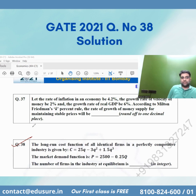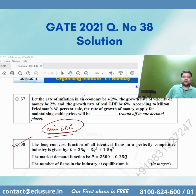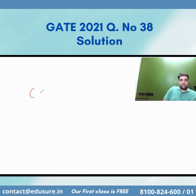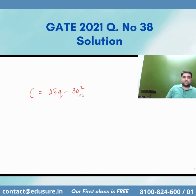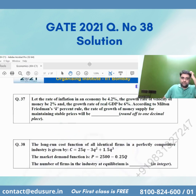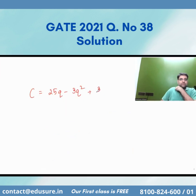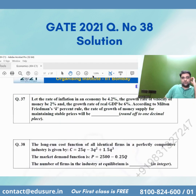Now for a perfectly competitive firm, I will minimize my long run average cost. That will give me my price. The cost function is C = 25q minus 3q squared plus 1.5q cubed, and demand is P = 2500 minus Q by 4.